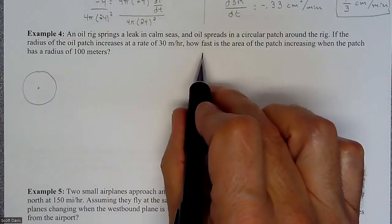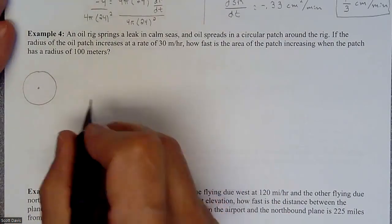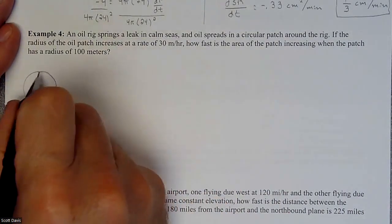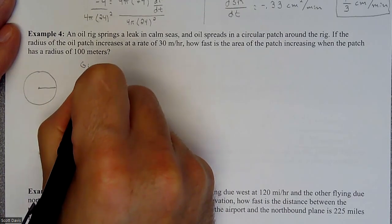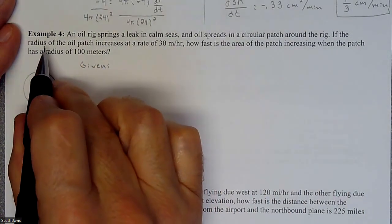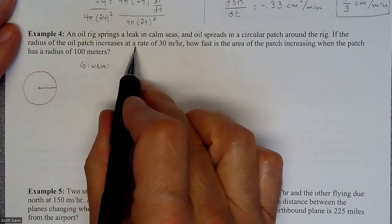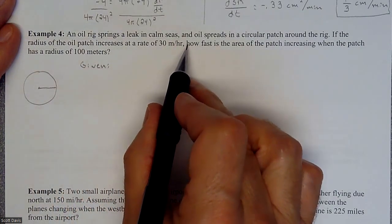So we are given, let's start off with kind of what we know here. We got this circle going on. We are given that the radius of the oil patch is increasing at a rate of 30 meters per hour.